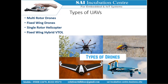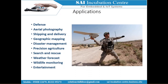The fourth type is the fixed-wing hybrid VTOL — Vertical Takeoff and Landing. It can take off and land vertically and combines both wing-like and rotor-like structures. Today's session focuses only on multi-rotor drones; other drone types will be covered in upcoming videos.